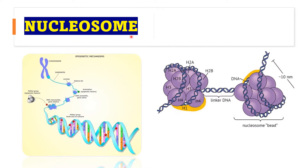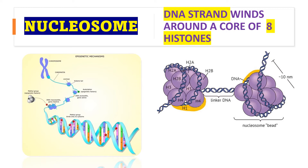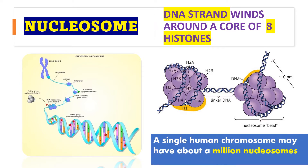What is a nucleosome? A nucleosome is a single DNA strand wound around a core of eight histones. Histones are proteins present in chromatin. A single DNA strand plus eight histones is called a nucleosome. In a human chromosome there are millions of nucleosomes.